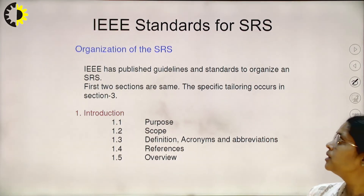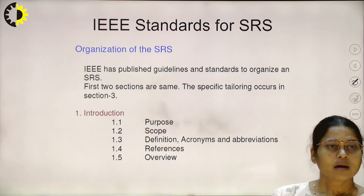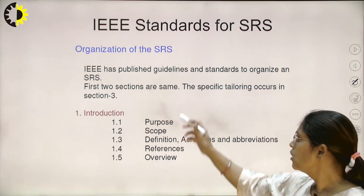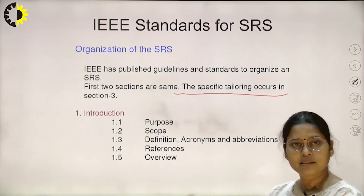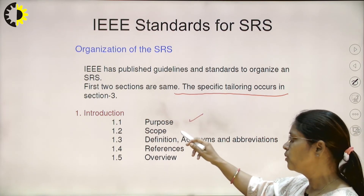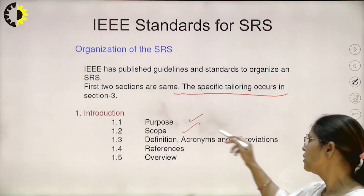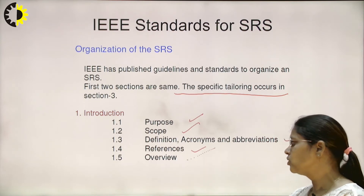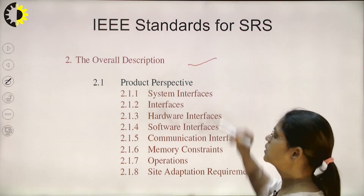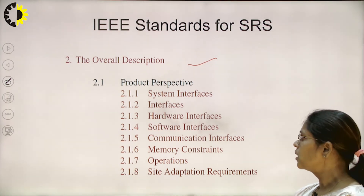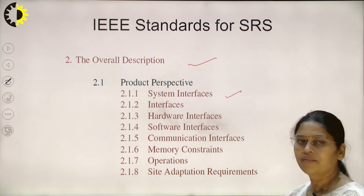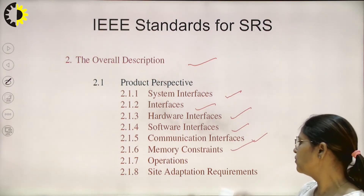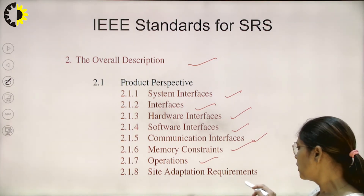This is the IEEE standard for preparing the SRS. The first two sections are the same; specific requirements occur in section 3. Section 1 covers: 1.1 purpose of the software, scope, definitions, abbreviations, references, and overview of the project. In the second part we give the overall description about the project — product perspective, system interface, hardware interface, software interface, communication interface, memory interface, operation and site adaptation requirements.